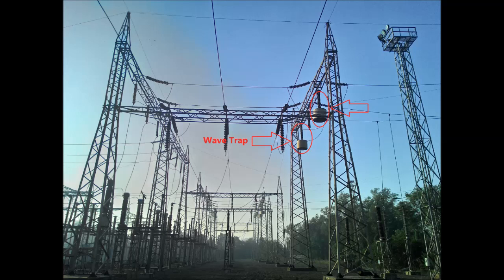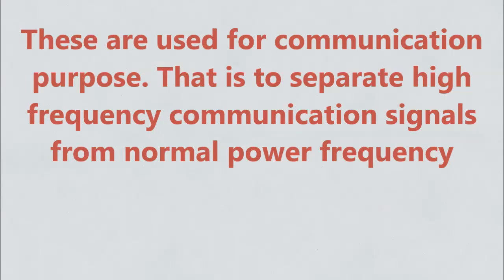Seventh, wave trap, also called line trap. Wave traps are cylinder-like structures mounted in line on a high voltage AC transmission power line. These are used for communication purposes — that is, to separate high frequency communication signals from normal power frequency.